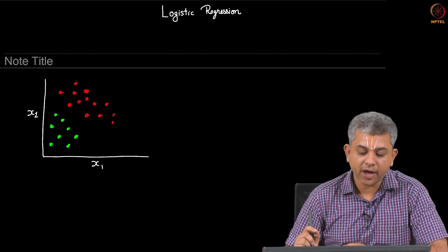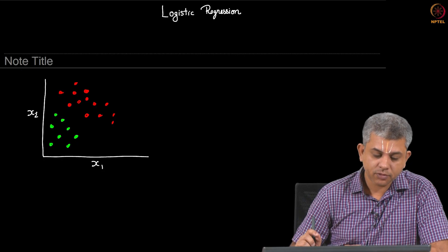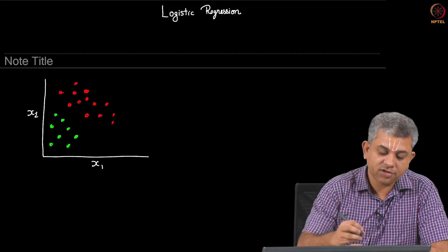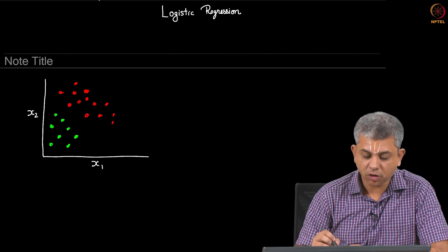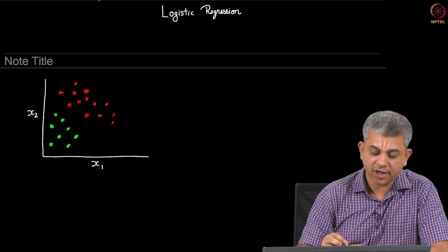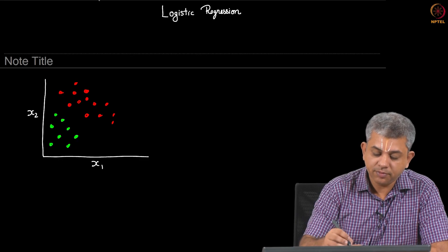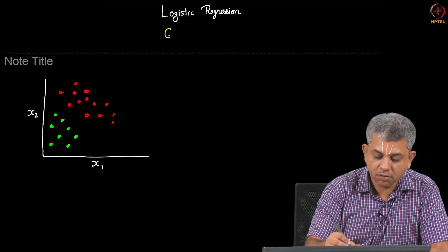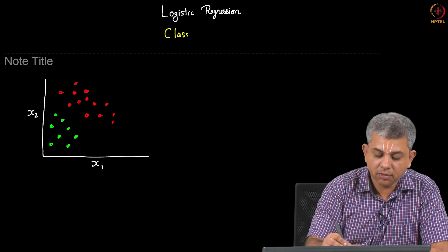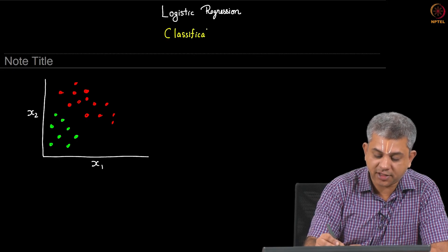In this video we will be looking at our first classification algorithm called logistic regression. Note that even though the name regression is sitting there, it is actually a classification algorithm.